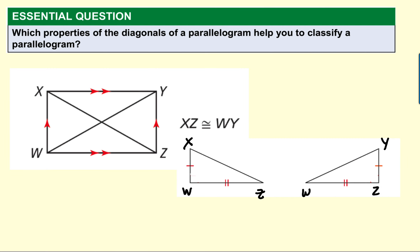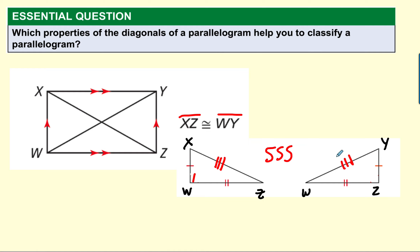Now let's talk about this figure. This is a parallelogram, and the diagonals end up being congruent. I'm looking at triangle XWZ and triangle YWZ. I know that XC is congruent to WI, so these two triangles are congruent by side-side-side. That means angle 1 and angle 2 are congruent — angle 1 is congruent to angle 2.